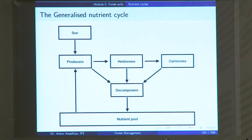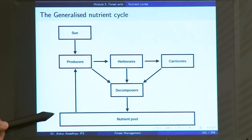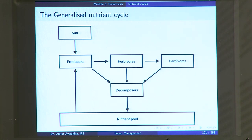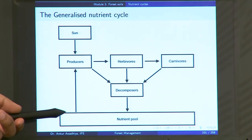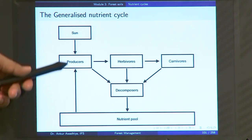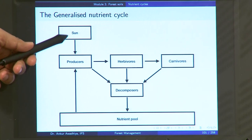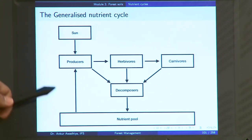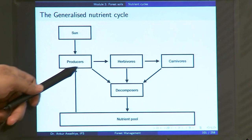A generalized nutrient cycle is represented as follows. You have the sun providing the source of all energy, and here you have the nutrient pool that is present in the atmosphere, lithosphere, and hydrosphere — the non-living components. The nutrients are moving from these non-living compartments of the earth and are taken up by the producers, which use the sun's energy to incorporate these nutrients into their own bodies.